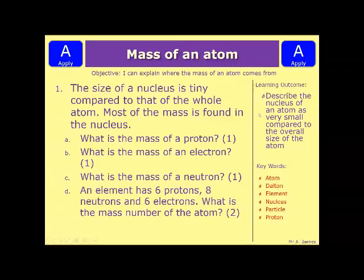Okay, let's have a look at an example question then. The question here says the size of a nucleus is tiny compared to that of the whole atom. Most of the mass is found in the nucleus and then it splits off into four sub-questions. So A, what is the mass of a proton, B, what is the mass of an electron, and C, what is the mass of a neutron. We've got one mark for each of those.